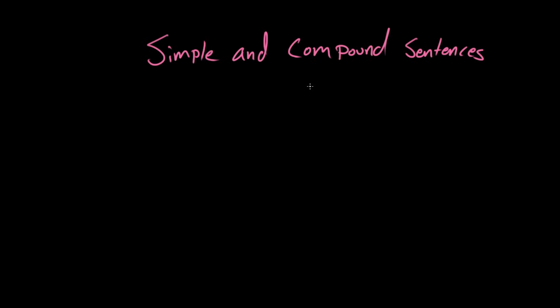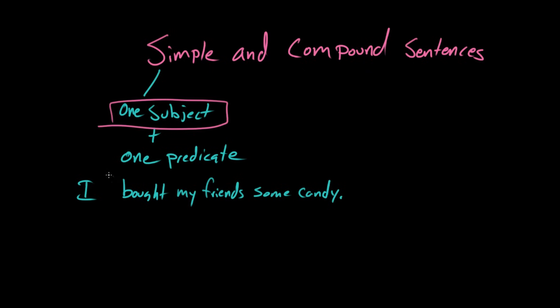And today Paige, you and I are going to cover those differences. Let's do it. So, a simple sentence is really just what it says on the tin. A simple sentence consists of one subject and one predicate, and that's it. Right. So, in the sentence, I bought my friends some candy. All right, we got our one subject, I, and then we have our one predicate. Bought my friends some candy.